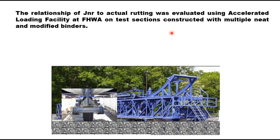The relationship of JNR to actual rutting was evaluated using an accelerated loading facility at FHWA on test sections constructed with multiple neat and modified binders. These sections included neat binder, air blown binder, SBS modified binder, crumb rubber modified binder, and other modified binders.